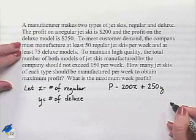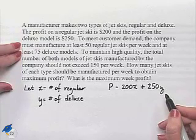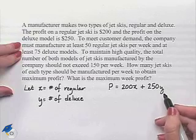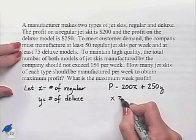Now we're given some constraints. To meet customer demand, the company must manufacture at least 50 regular jet skis per week. So that means that X has to be greater than or equal to 50.